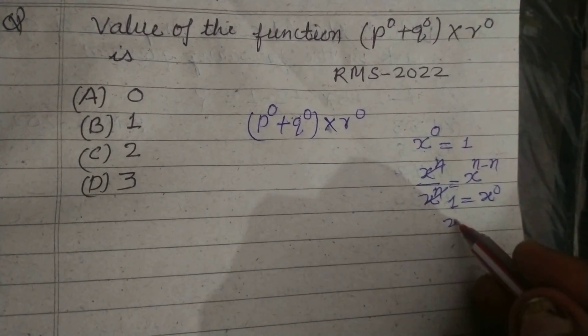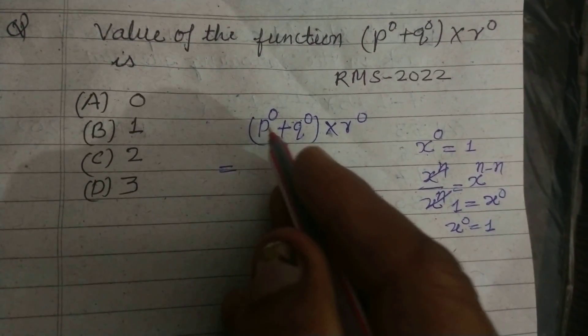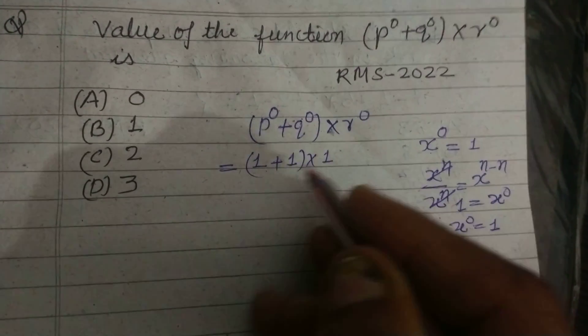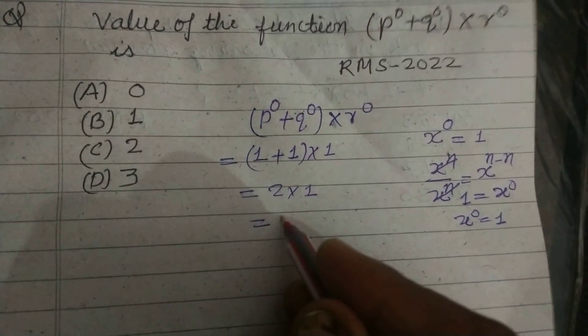So x^0 equals 1. Using this concept, we write 1 plus 1 into 1. So 1 plus 1 is 2, then 2 into 1, this is 2.